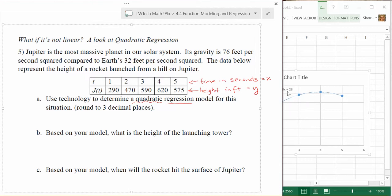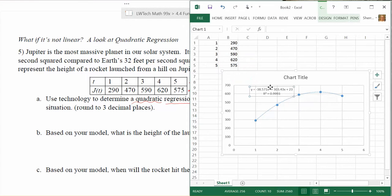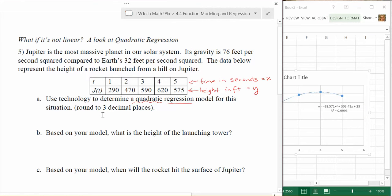When we determine our quadratic regression model, that is what we see right here: Y equals negative 38.571 x squared plus 303.43 x plus 23. So there's our model, and that's all that the question is asking for in part A.